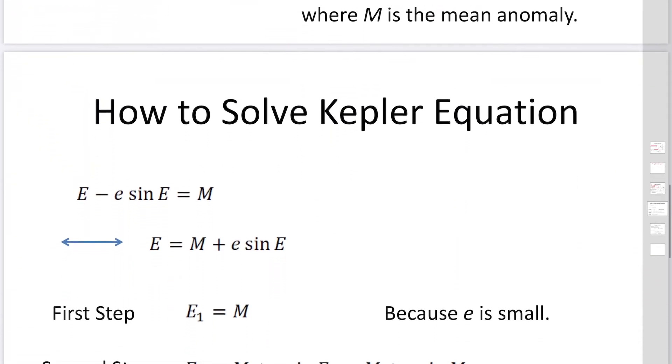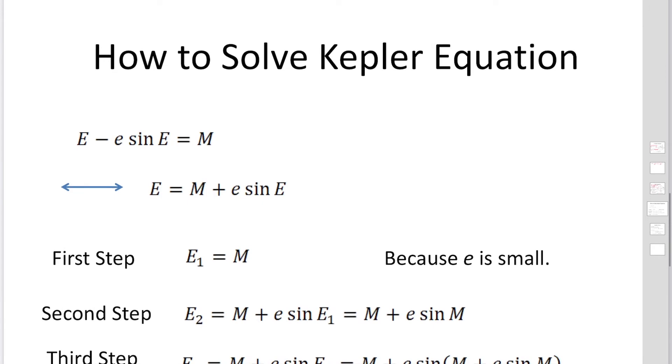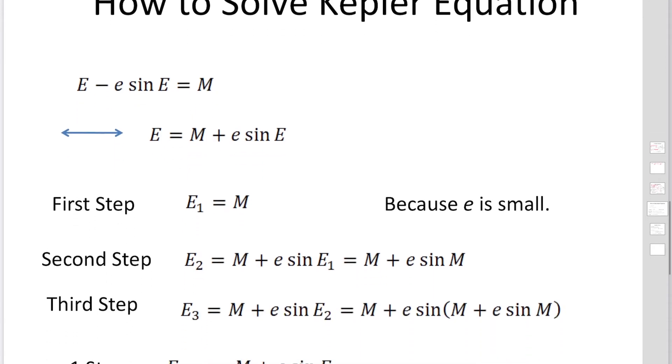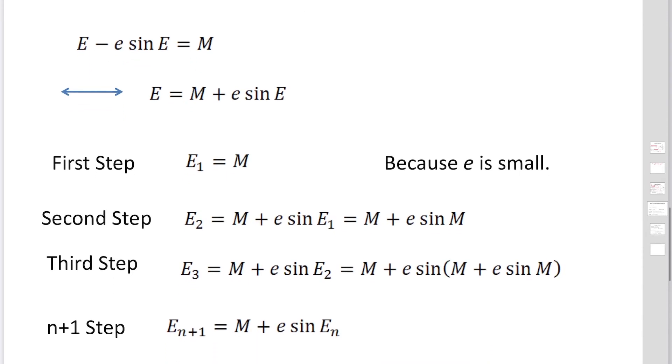So how to solve the Kepler equation? E minus E sine E. We are changing this equation. Here E is expressed in this form. And in the case of the planet, eccentricity is really small values. Then compared with the first term, the second term is much, much smaller. We approximate E sub 1 is M.